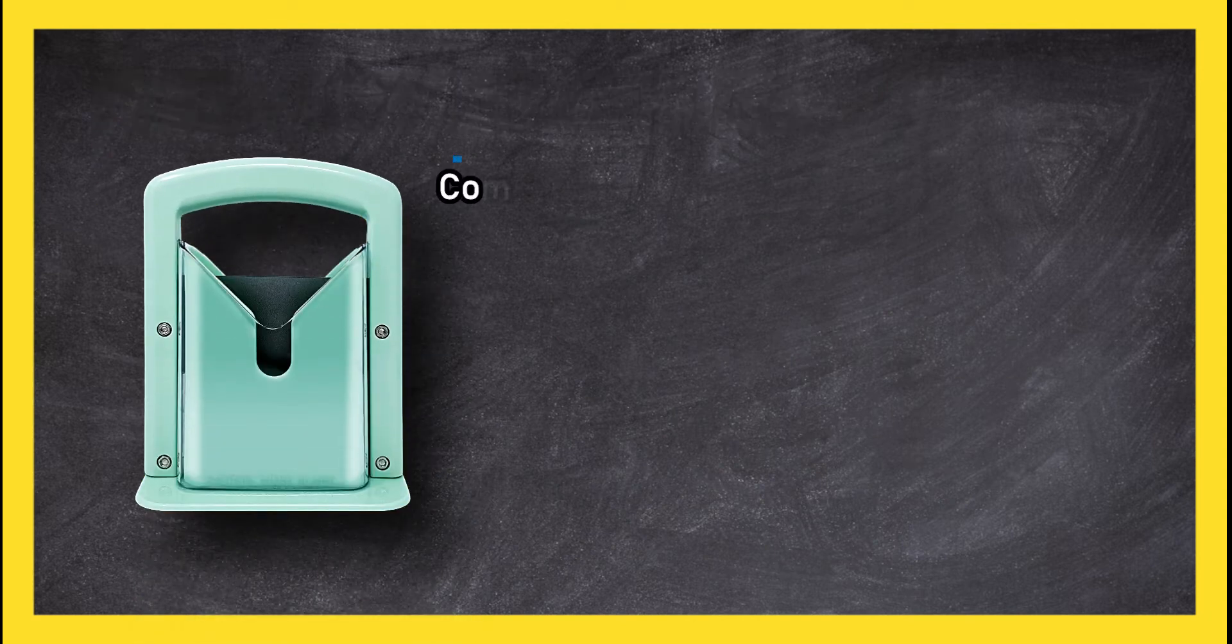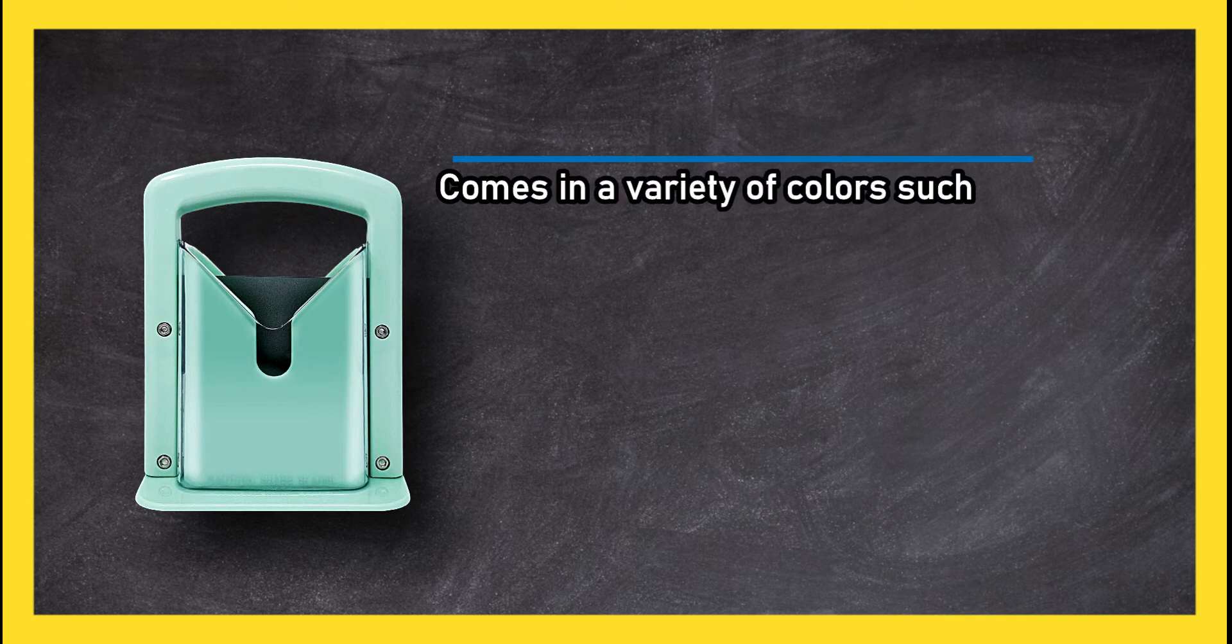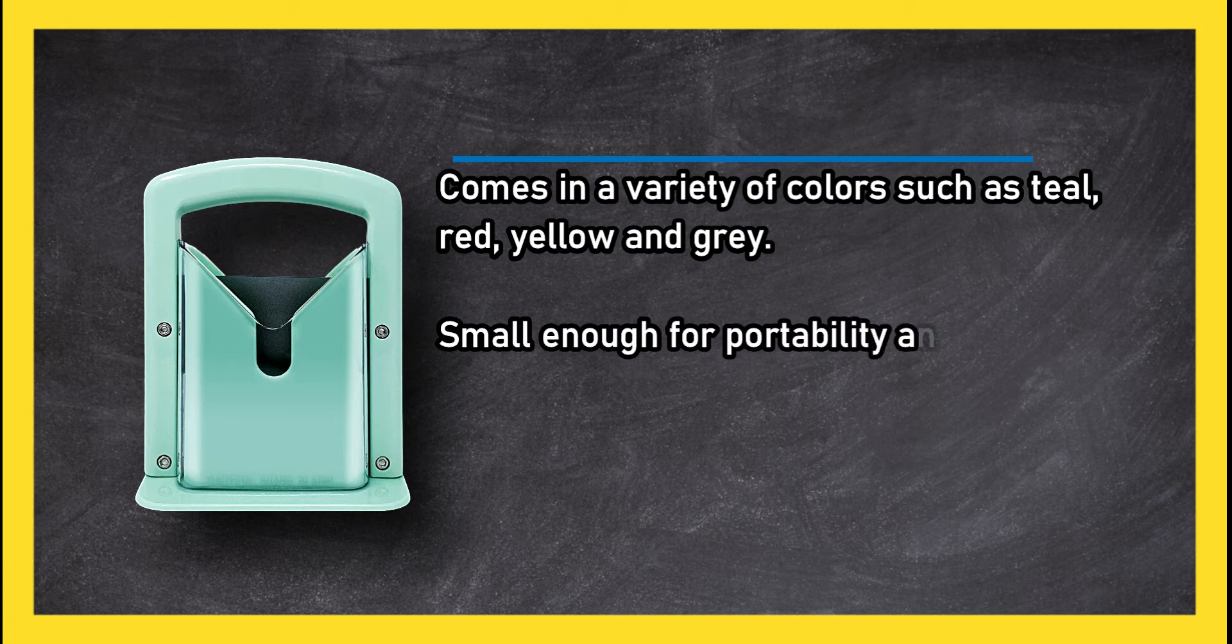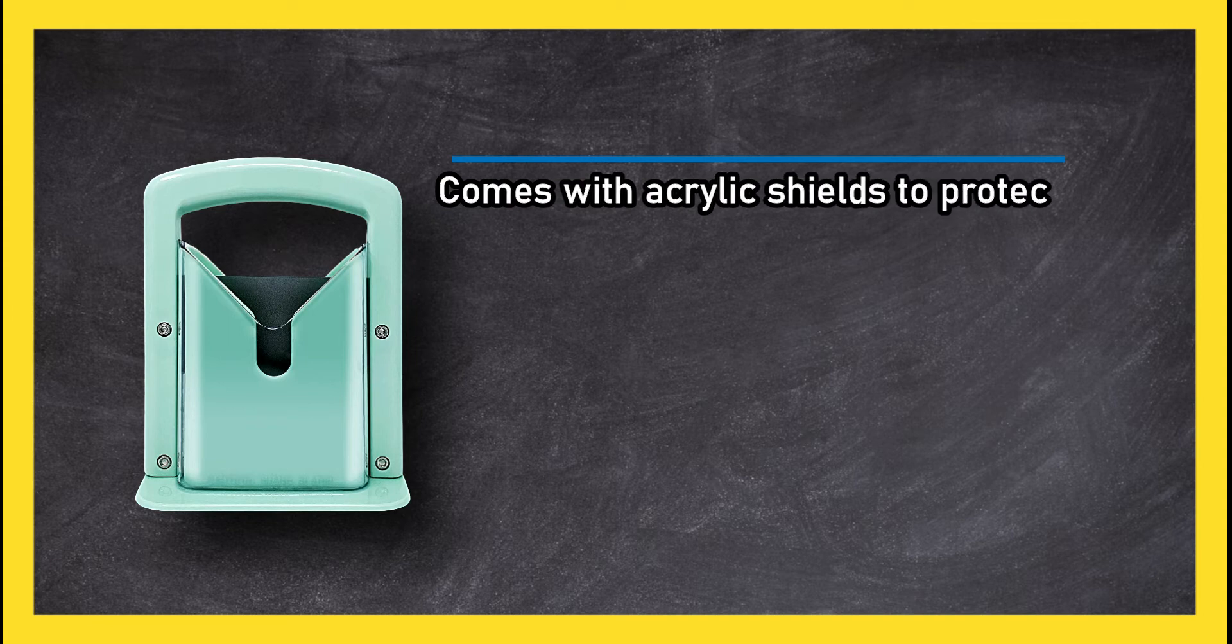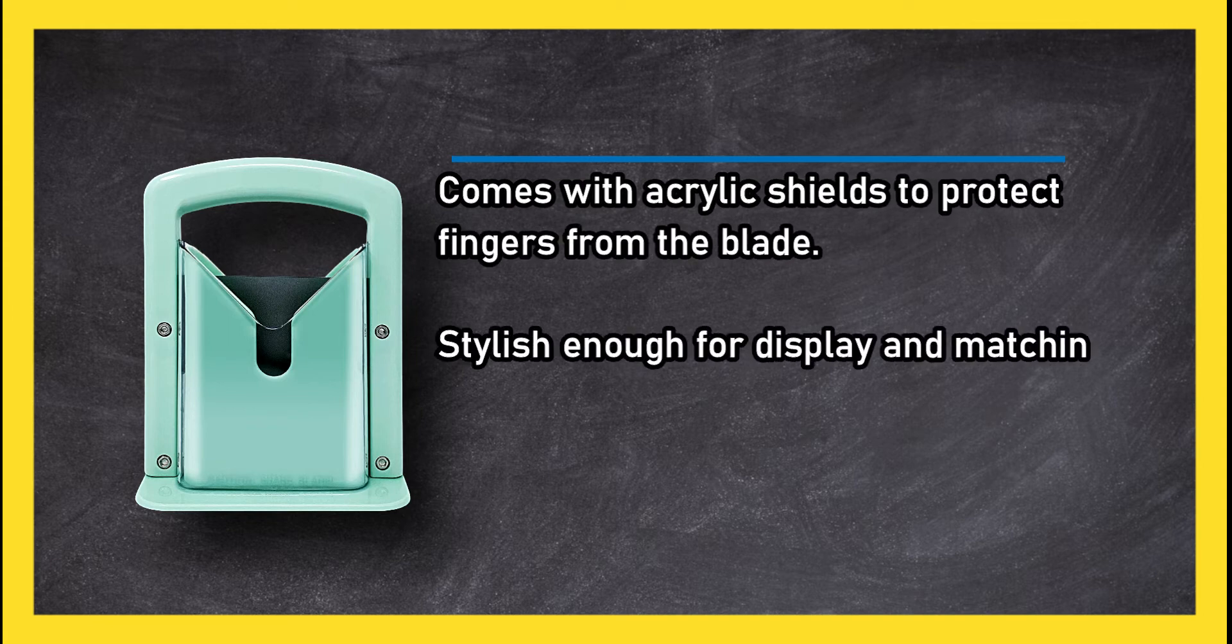At number three, Slice Bagel Guillotine Cutter comes in a variety of colors such as teal, red, yellow, and grey. Small enough for portability and storing in tight spaces, comes with acrylic shields to protect fingers from the blade. Stylish enough for display and matching other appliances. Some report the blade being dull.